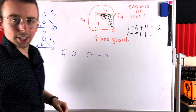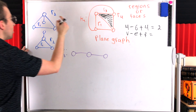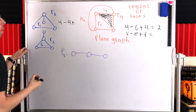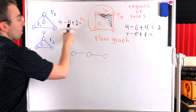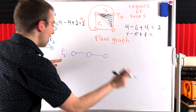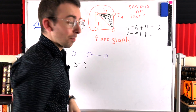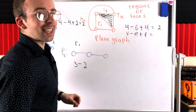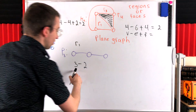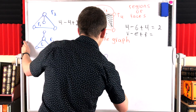What about the path graph on three vertices? It has three vertices, two edges, and since it's a tree it splits the plane into just a single external region. Three minus two plus one equals two. Amazing — this is an incredible result. It's called Euler's identity, and the result is that vertices minus edges plus faces for any connected plane graph always equals two. So for any plane drawing of a connected planar graph, V minus E plus F is always going to be two.